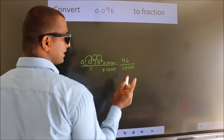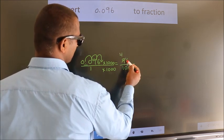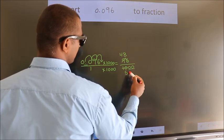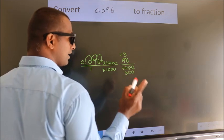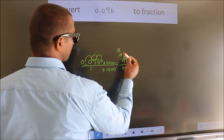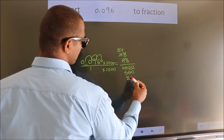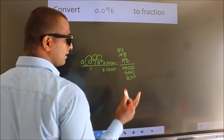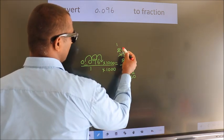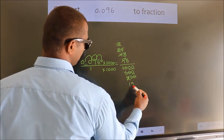I now cancel with 2. 96 becomes 48, 1000 becomes 500, this 0 as it is down. I cancel with 2 again. 48 becomes 24, 500 becomes 250. Cancel with 2 again. 24 becomes 12, 250 becomes 125.